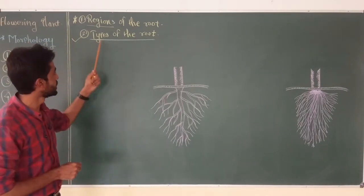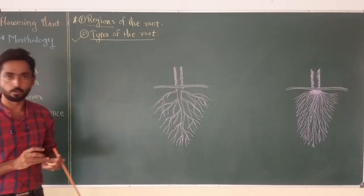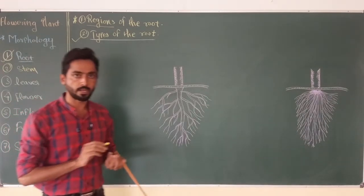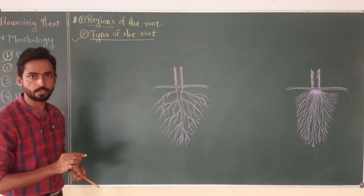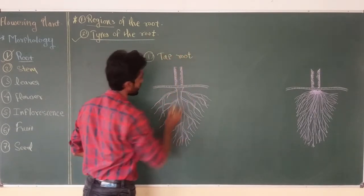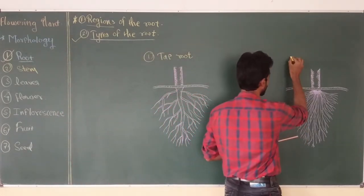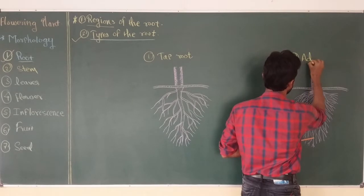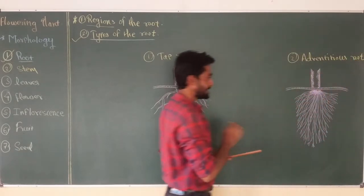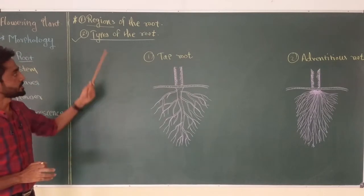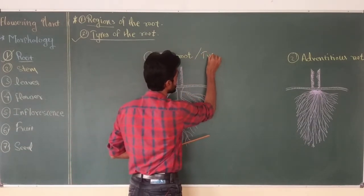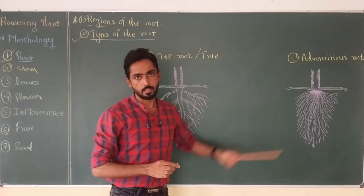In this video I am going to talk about the different types of root present in the flowering plants. We can easily differentiate two types of root system present in these plants. The first type, which is quite a developed one, is called the tap root system, while the second type is the adventitious root system. Tap roots are also called true roots, and adventitious roots are also called false roots.